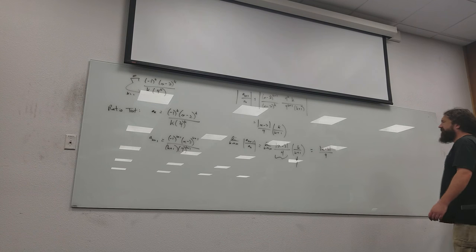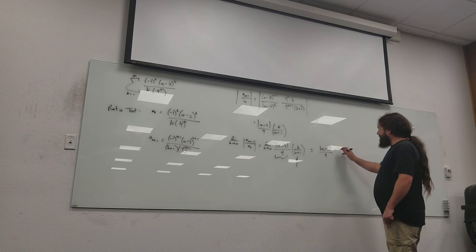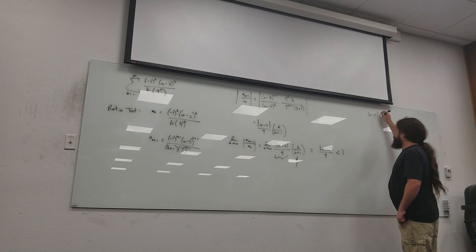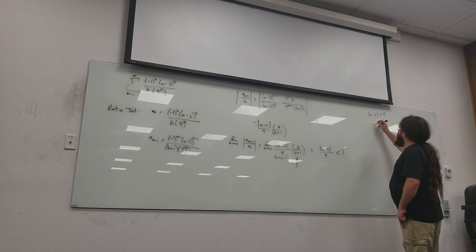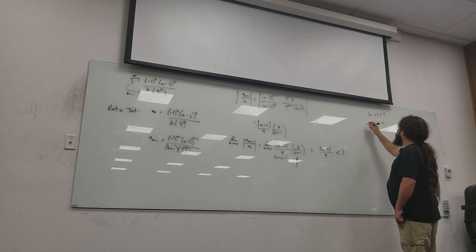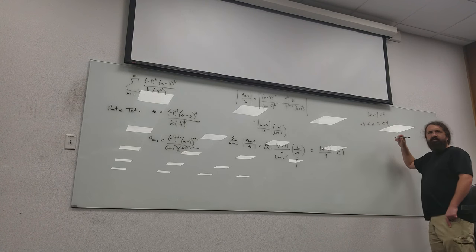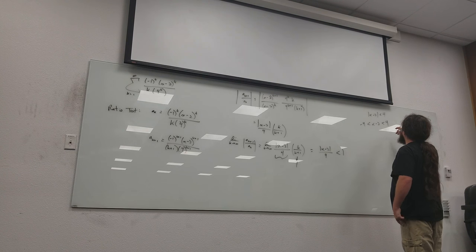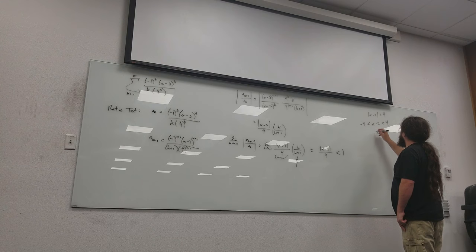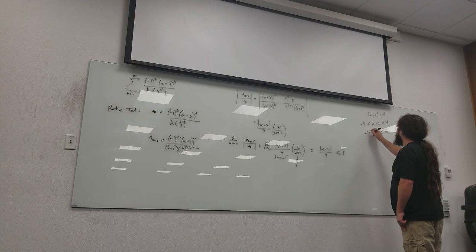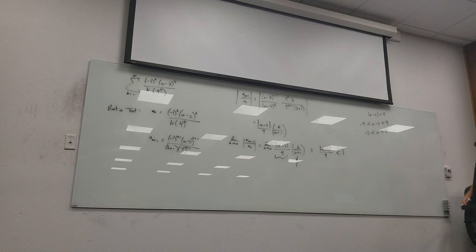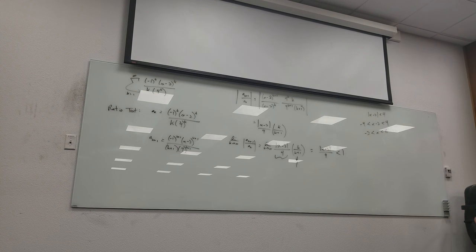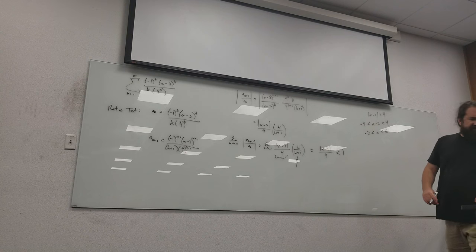Okay. So, I need this to be less than 1 to converge. So, that tells me absolute value of x minus 2 is less than 4. Which means x minus 2 is between negative 4 and 4, right? So, if I add 2 on all three of these, I get negative 2 to 6. That's what my interval looks like. So, the other part of this question is we've got to check the endpoints.